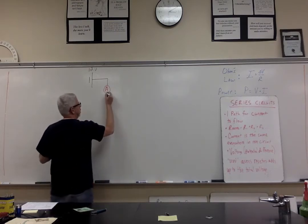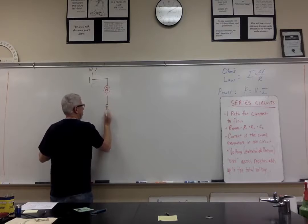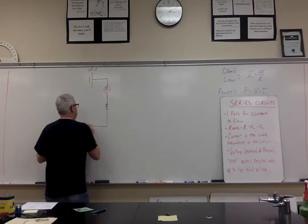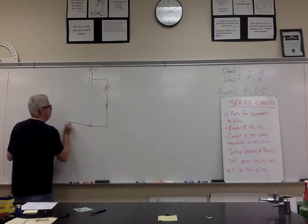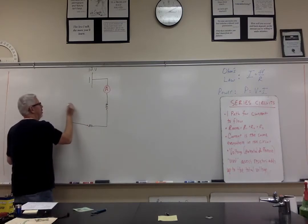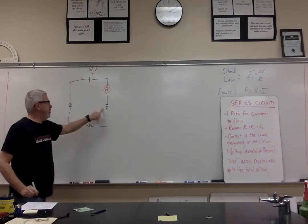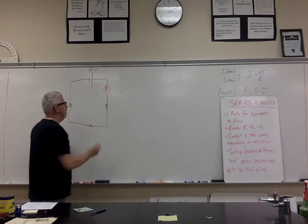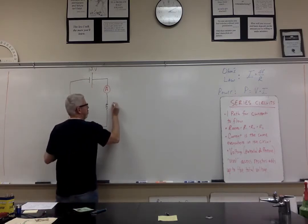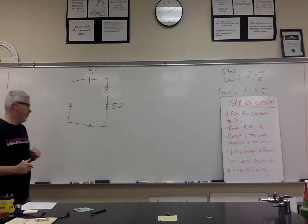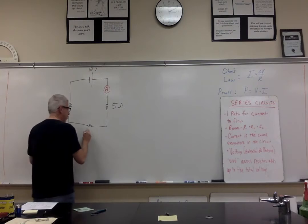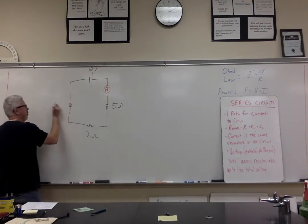Next, we're going to have a resistor here, one at the bottom of the circuit, and one over on the left side of the circuit. I'm going to say the first resistor has 5 ohms of resistance. Down here, I'm going to have one with 3 ohms of resistance. And over here, I'm going to have one with 4 ohms of resistance.